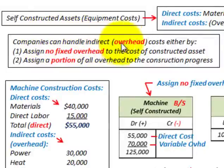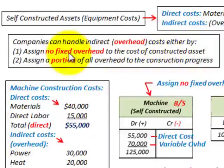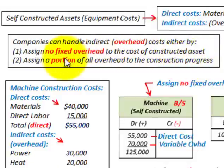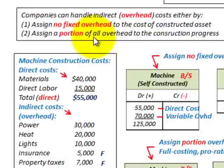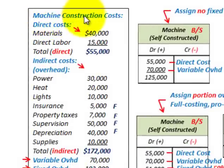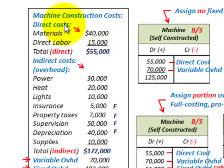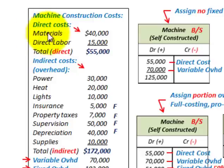Companies can handle these indirect or overhead costs either by, one, assigning no fixed overhead to the cost of the constructed asset, or two, they can assign a portion of all the overhead to the construction of this asset during the construction process. We're going to go through an example where we have a machine and we identify the construction costs as direct costs and indirect costs.